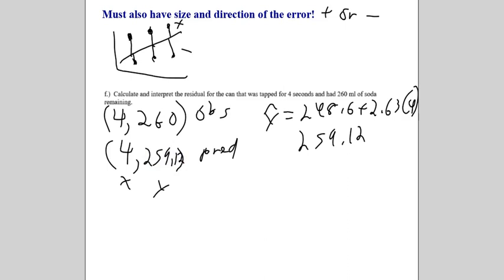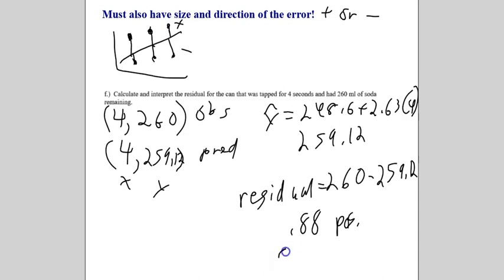So, now we know our observed y. We know our predicted y. We're just wrapping it all together. And now, to find the residual, we take our observed 260 minus our predicted 259.12. And we get 0.88. And that is positive. It's above the line because it's a positive number. Which means above the line. And we need to say that. Positive means above the line.